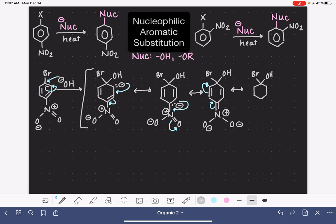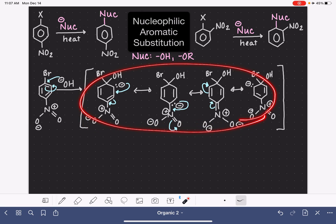Still have the leaving group attached. Now we have a negative charge in the ortho position. Our double bonds are back into the ring. This is going to be the last time we draw the nitro group out in full. We won't need to draw it out anymore. So there's all of our resonance structures for our intermediate. And again, the resonance structures are just showing us how the negative charge gets delocalized and helps us understand how this mechanism is even possible.